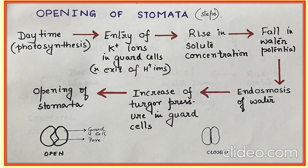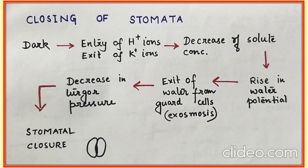This fall or decrease in water potential leads to endosmosis of water. Endosmosis of water means there is entry of water into the guard cells. This entry of water into the guard cells increases the turgor pressure, making them turgid, and this results in the opening of stomata.